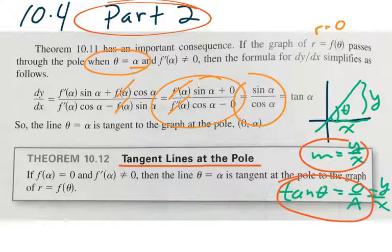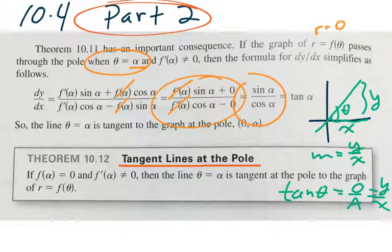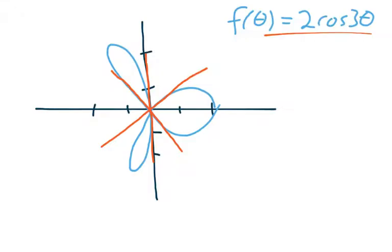Okay, so that's what we have wrapped up in our theorem. Let me clean off some of these lines here. So our theorem tells us that for alpha that goes through the pole, f of alpha, which is the radius, is 0, so it goes through the pole. And of course, the derivative is not 0, because that would mean that the denominator here was 0. So we can't have that. So if it goes through the pole at an angle alpha, then the line that corresponds to theta equals alpha is tangent to the graph of our given function.